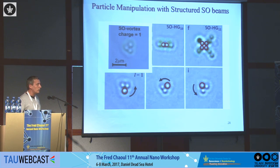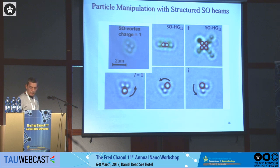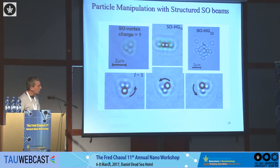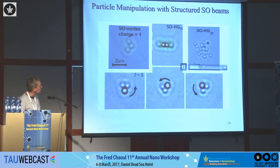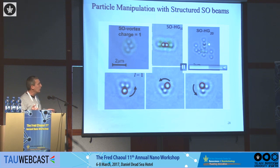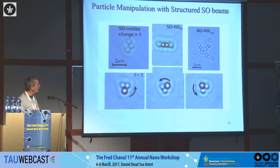We can also manipulate particles in other ways. With a super-oscillating vortex beam, we can rotate particles. With multiple lobes, we can trap different particles simultaneously — remember each spot can be as small as we want. Examples include a Hermite-Gauss 2-2-like super-oscillating beam with eight lobes, a 2-1 mode with fewer lobes trapping fewer particles, and a 2-0 mode trapping three particles in the center. The surrounding ring traps additional particles, but they are much less confined — again a manifestation of the larger gradient force in the central super-oscillating spot. We can control the number of trapped particles using this method.